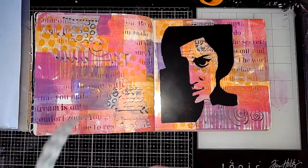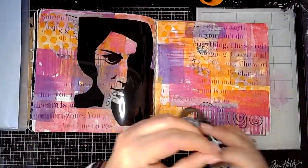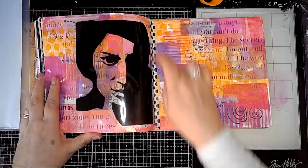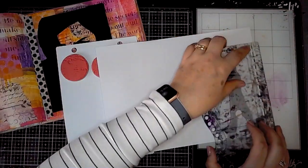So then I'm just going to use some washi tape to stick this acetate in place. I like the idea that you can still see the background through it and you can move it so that you can see what else is going on on the page.